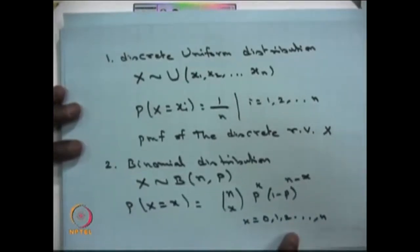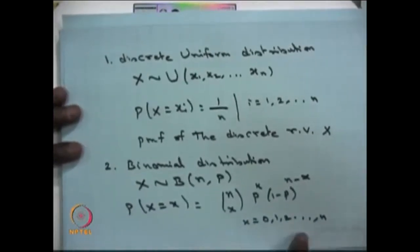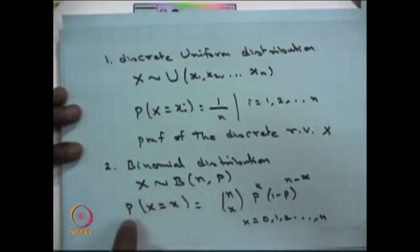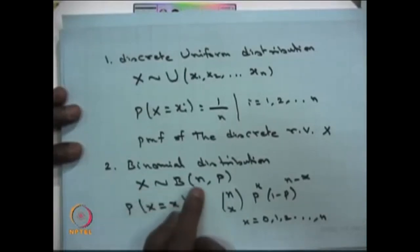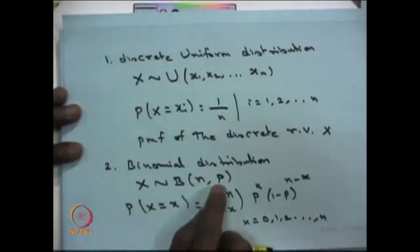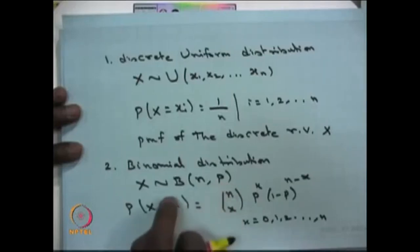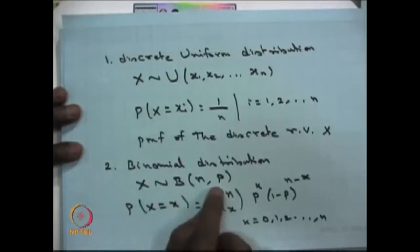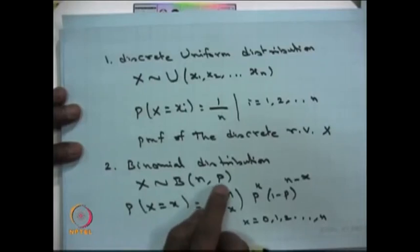This is called a binomial distribution. If you put n equal to 1, that gives the Bernoulli distribution random variable. Here p is the probability of success in each trial, and you can create binomial trials by having n independent Bernoulli trials, each with probability of success p.